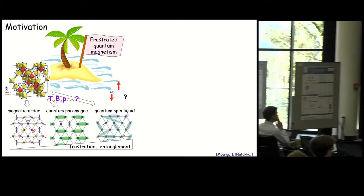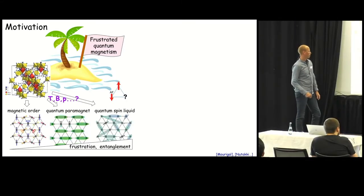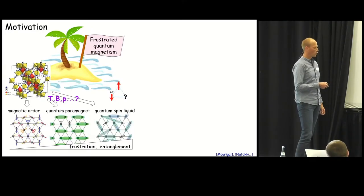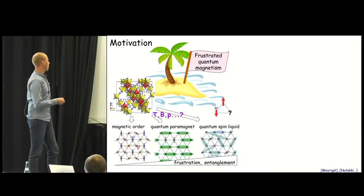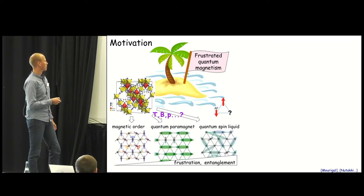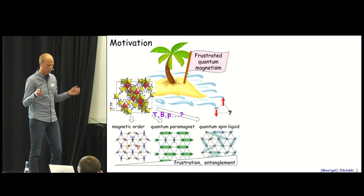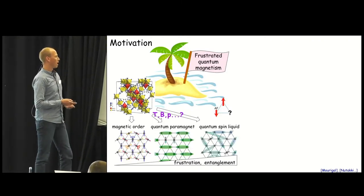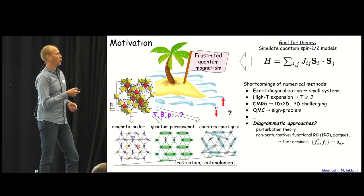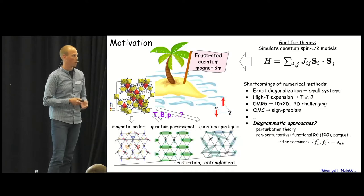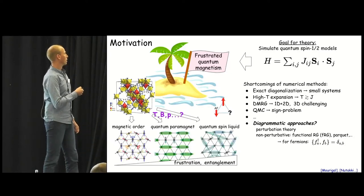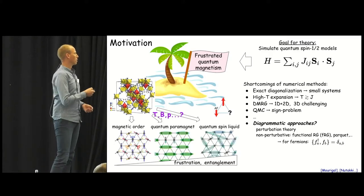Sometimes the frustration is not quite strong enough and instead you form something like a quantum paramagnet, here a valence bond crystal where you pair neighboring spins in a singlet and you break translational invariance in that way, or even less spectacular the system can order magnetically. The question is of course what of these different choices are realized at a given temperature, magnetic field, or pressure. This is what our experimental friends pursue in the lab every day, but it's also a formidable challenge for the theory community. We typically write down model Hamiltonians, here spin one half Heisenberg systems, and in this talk I will focus on spin one half exclusively. The question is: given a lattice, given coupling constants, what is the phase diagram.